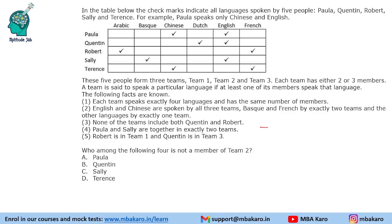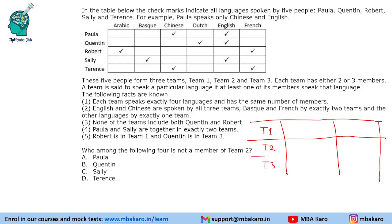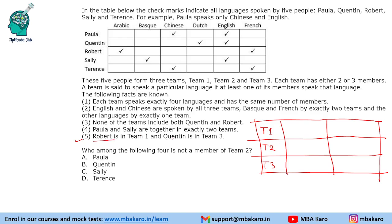We need to make 3 teams — Team 1, Team 2, and Team 3 — and put these people in them. It is either 2 or 3 people per team, and we need to assign languages as well. We will put the last information first because that directly gives us the people: Robert is in Team 1 and Quinton is in Team 3.